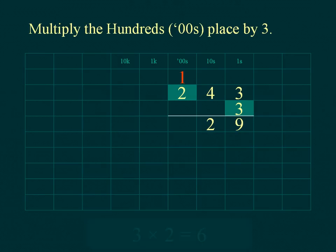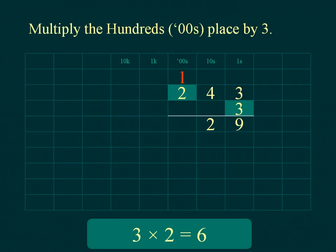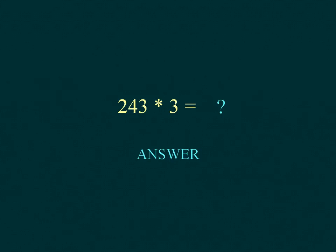Multiply the hundreds of the multiplicand. Add the hundreds at the top carried from the tens place. Place the result below the line in the hundreds place.